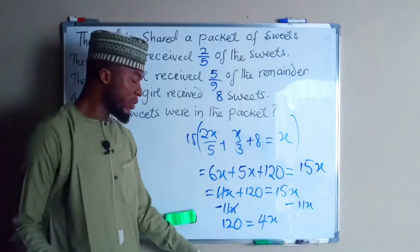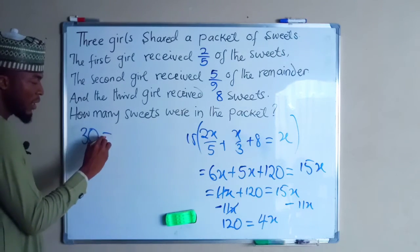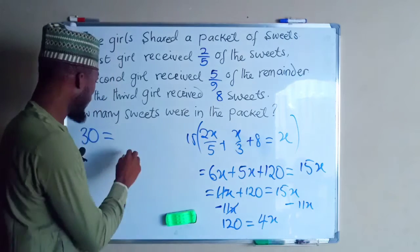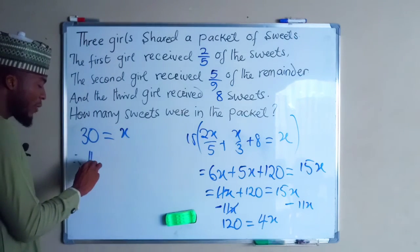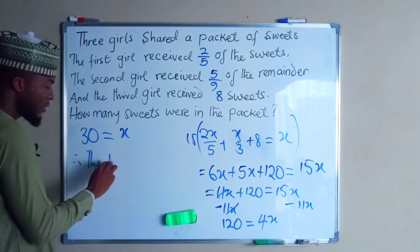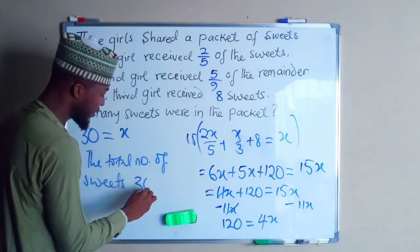So 120 divided by 4 is 30, and this is equal to 4X divided by 4, we have only X. This shows that the total number of sweets is 30.